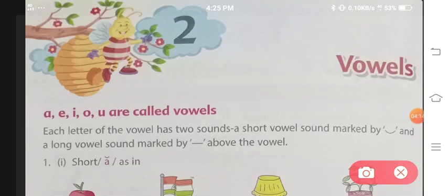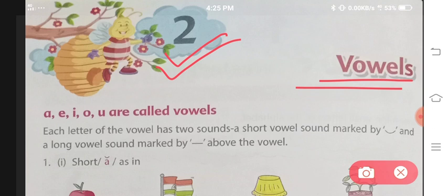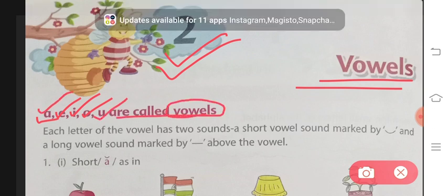Now moving further to chapter number 2 of your Impressions book, a book for grammar and composition. The same class, that is class 1, chapter 2: Vowels. Just now we learned that there are 5 vowels. A for apple, E for elephant, I for ice cream, O for owl and U for umbrella. These 5 are known as your vowels.